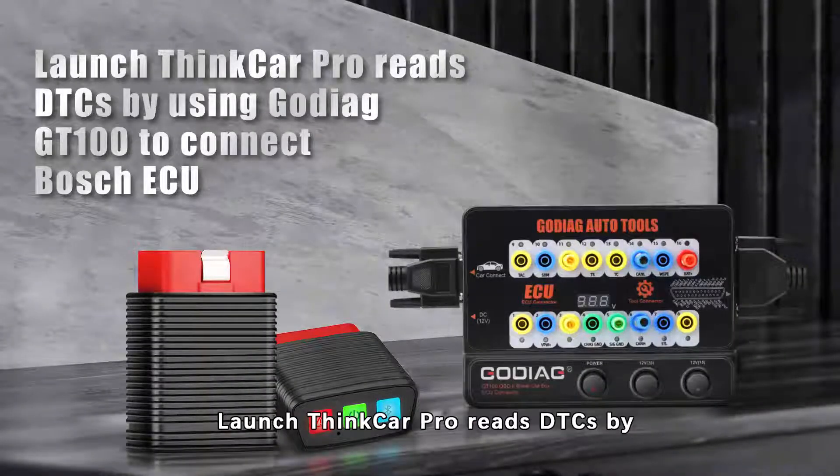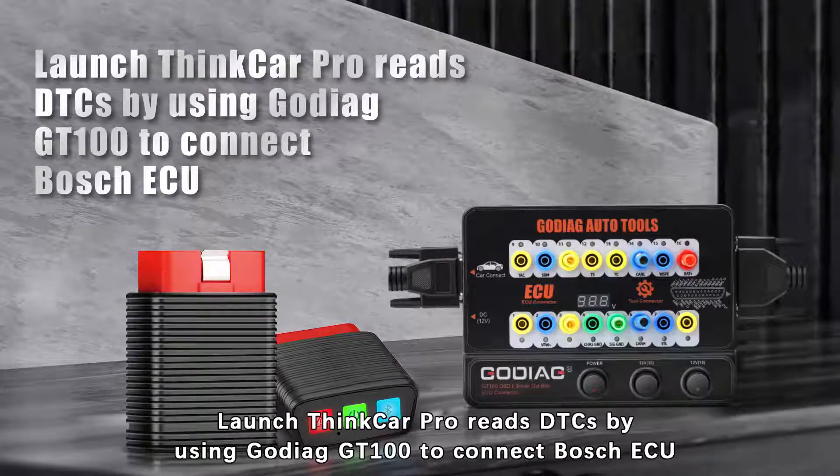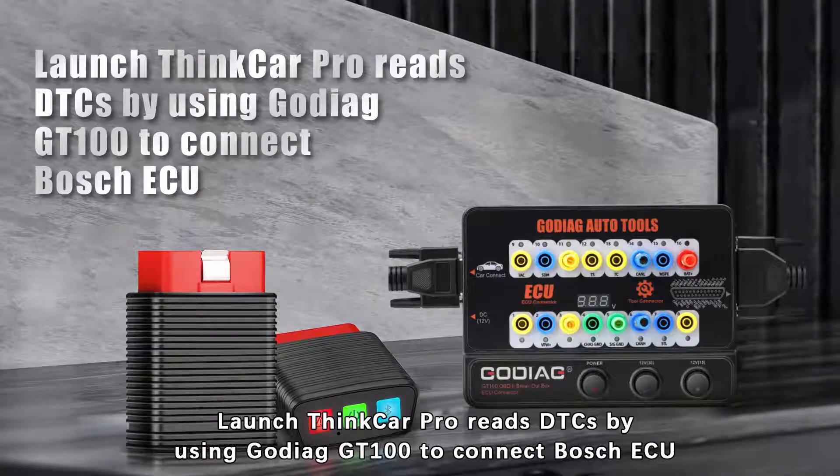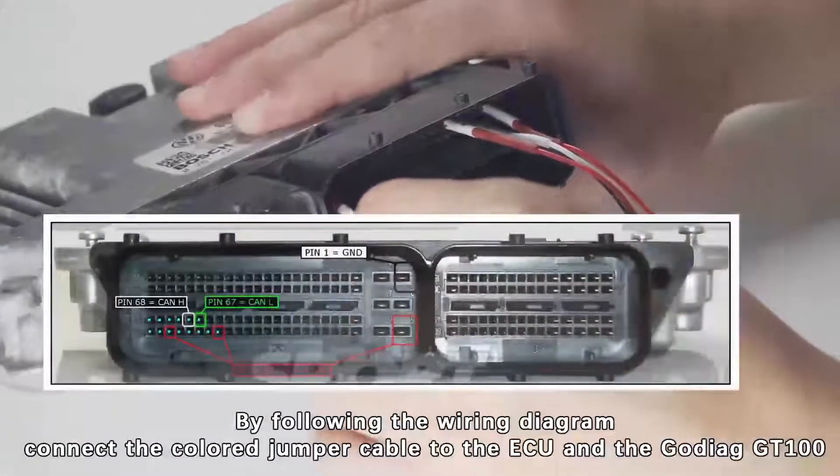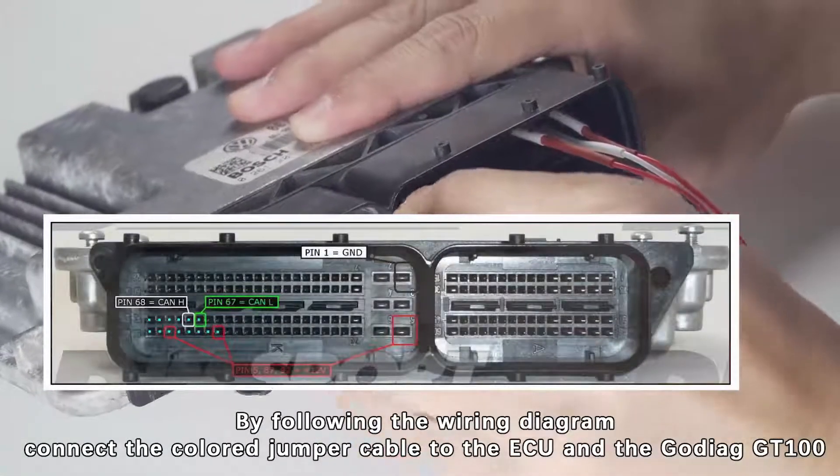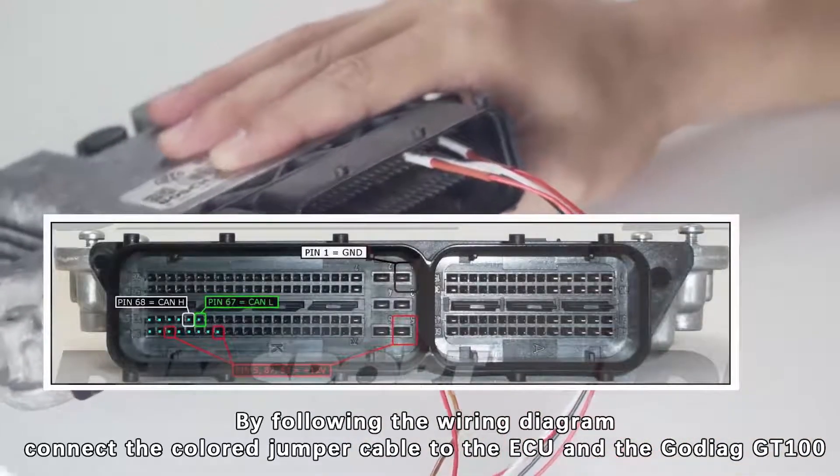Launch Syncar Pro RezDTS by using Goddike GD100 to connect Bosch ECU. By following the wiring diagram, connect the color jumper cable to the ECU and the Goddike GD100.